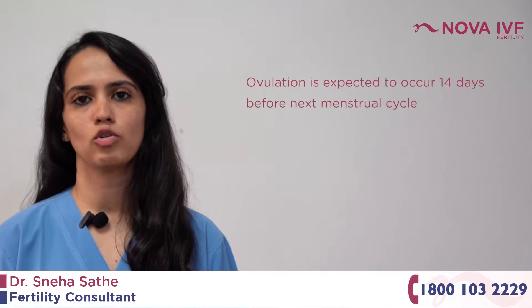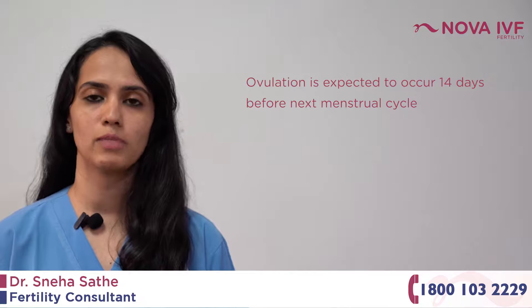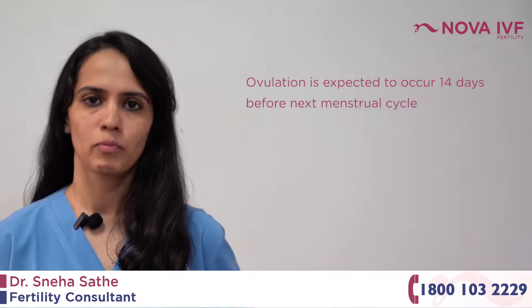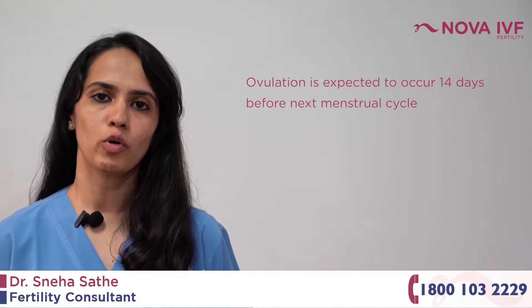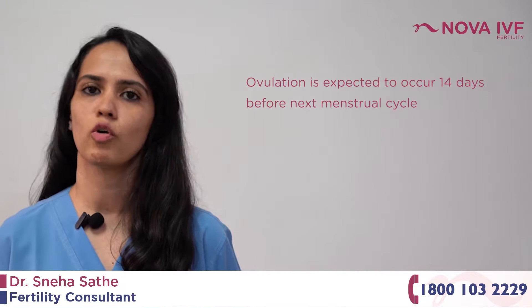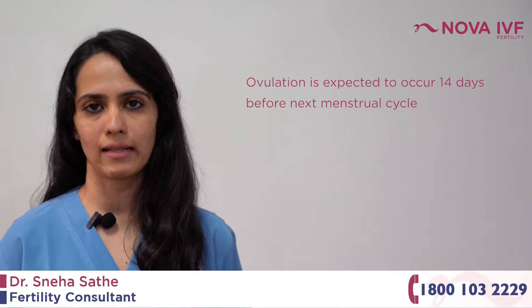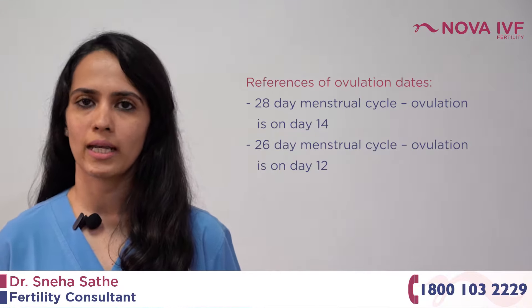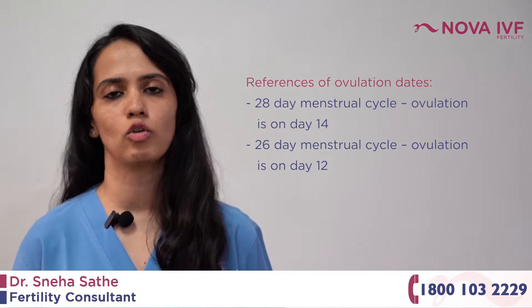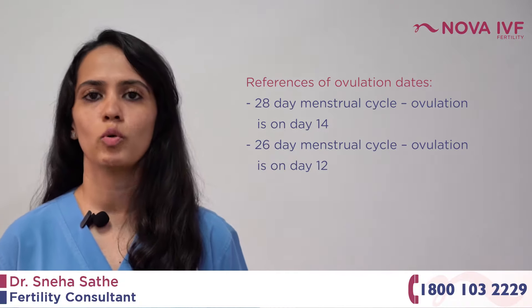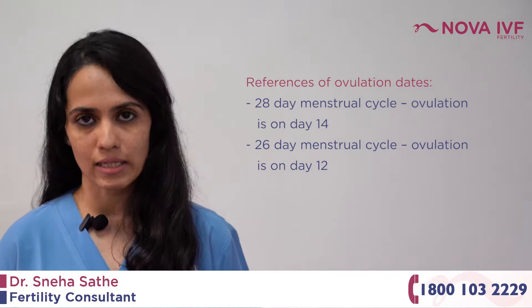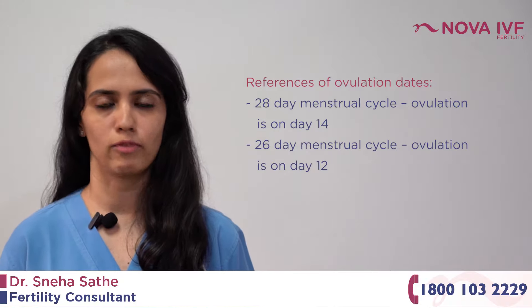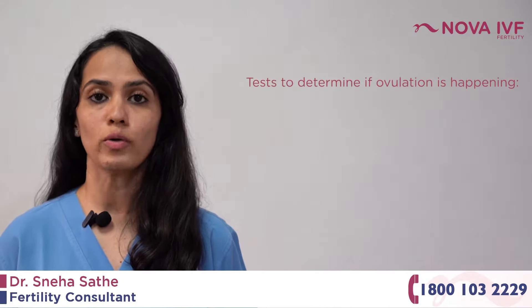The first point is: are you ovulating regularly? Ovulation is expected to occur 14 days prior to the onset of the next menstrual cycle, so it is important to know whether you're ovulating at the right time every month. For a woman who has a 28-day menstrual cycle, ovulation is expected to occur on day 14. For a woman who has a 26-day cycle, ovulation is expected to occur on day 12, and so on.